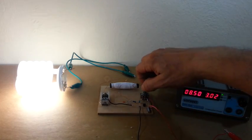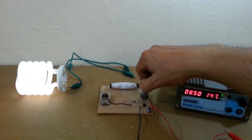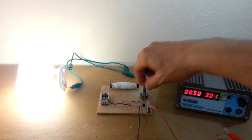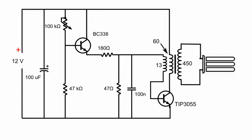In this tutorial I will show you how to make an inverter for fluorescent lamps. This is the schematic. The only component that we have to make is the transformer, which has a ferrite core and three coils: a 60-turn primary, a 450-turn secondary, and a 13-turn feedback coil. The fluorescent tube connects to the secondary and the power is controlled with a potentiometer.